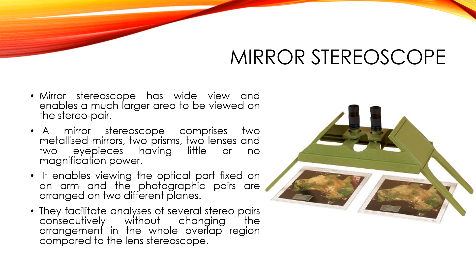A mirror stereoscope comprises two metalized mirrors, two prisms, two lenses, and two eyepieces having little or no magnifying power. The optical part is fixed on an arm, and photographic pairs are arranged on two different planes so that we can view the photographic pairs in two different planes simultaneously.